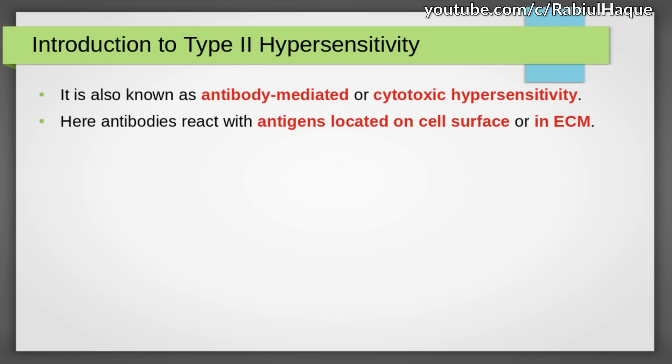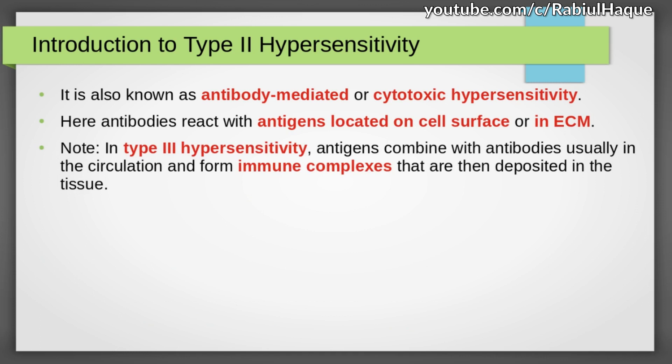The location of antigens is very important. In type 2 hypersensitivity, there is reaction of antibodies with antigens, but the antigens are located on cell surface or in the extracellular matrix. This is different from type 3 hypersensitivity, where antigens combine with antibodies usually in the circulation, resulting in formation of immune complexes that are then deposited in the tissue.